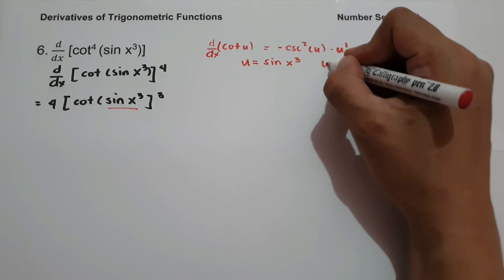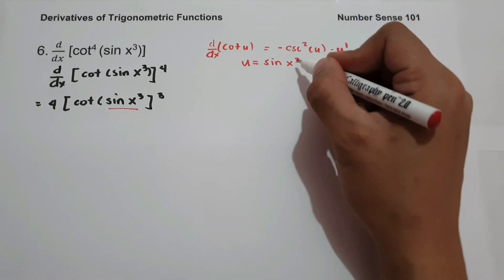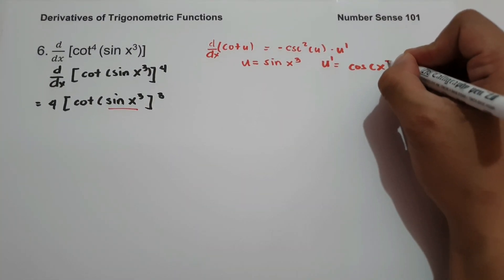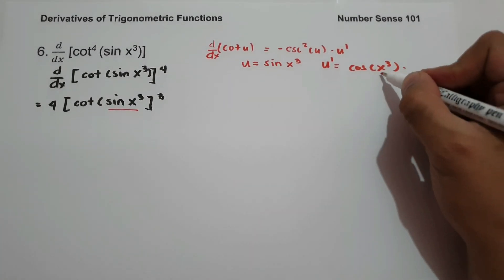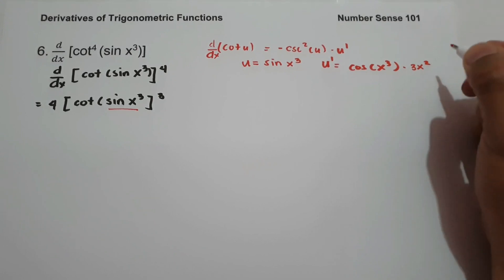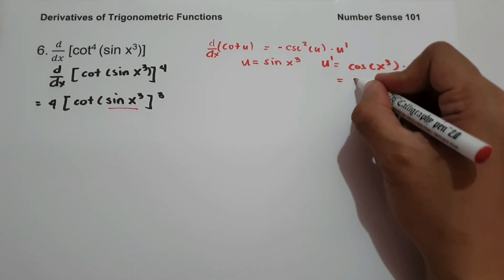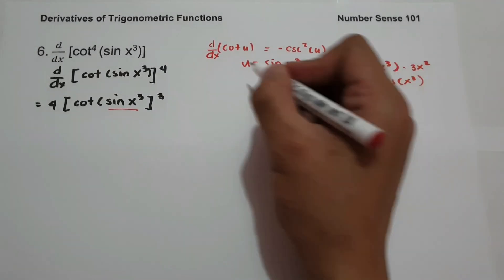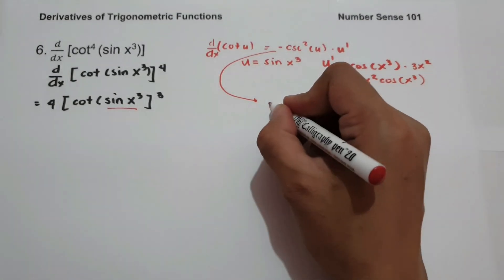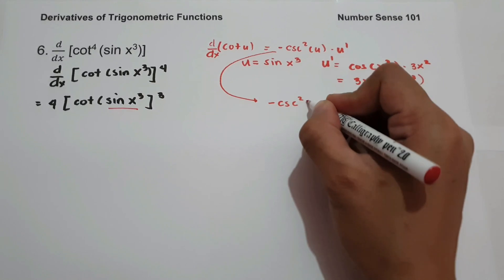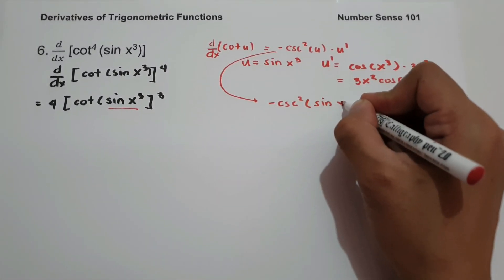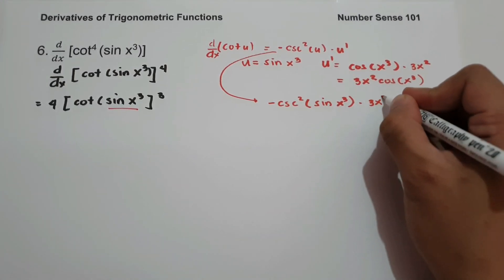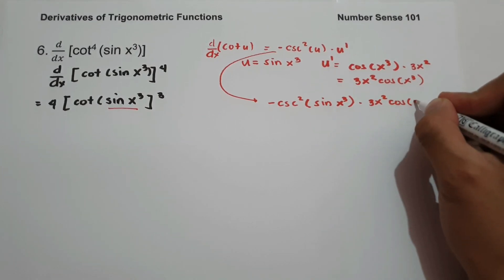The value of u is sin(x³), and u' is the derivative of sin(x³). The derivative of sine is cosine, so we have cos(x³) times the derivative of x³, which is 3x². Simplifying, u' equals 3x²cos(x³). So we have negative csc²(sin(x³)) multiplied by 3x²cos(x³).